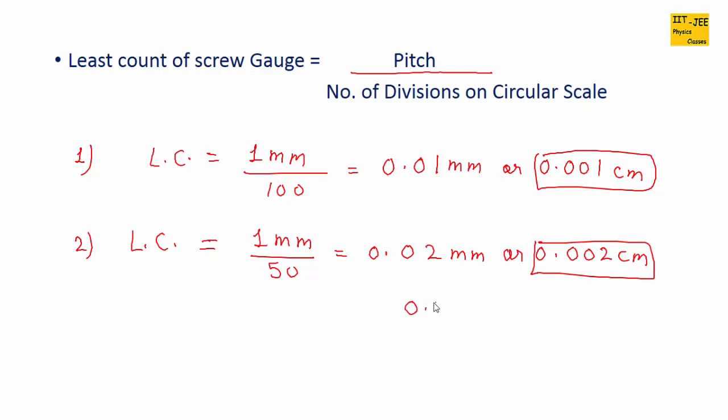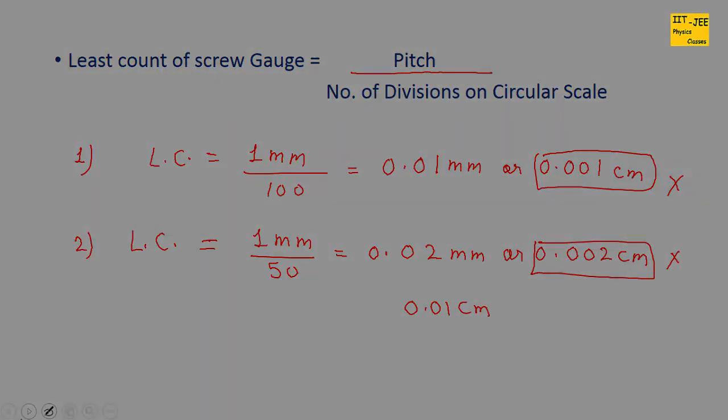So the correct answer is the vernier caliper with a least count of 0.01 centimeter. I hope you understand the strategy to solve this problem. If you have any questions, you can ask in the comment box below. Thank you.